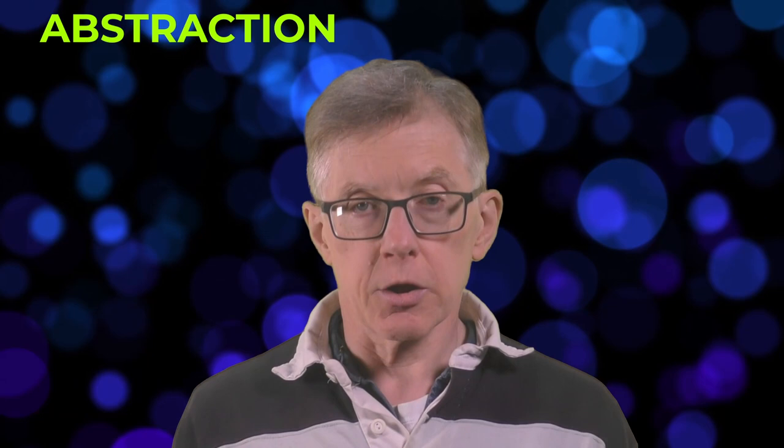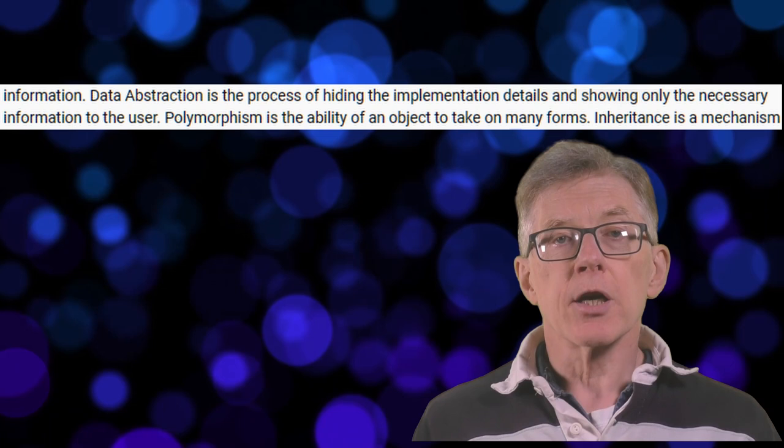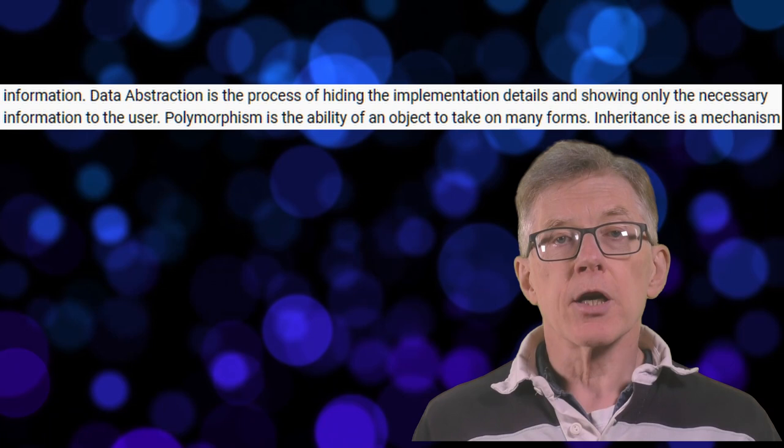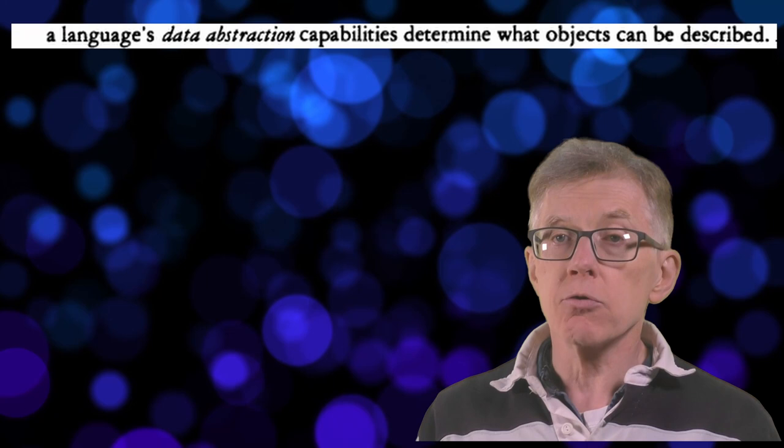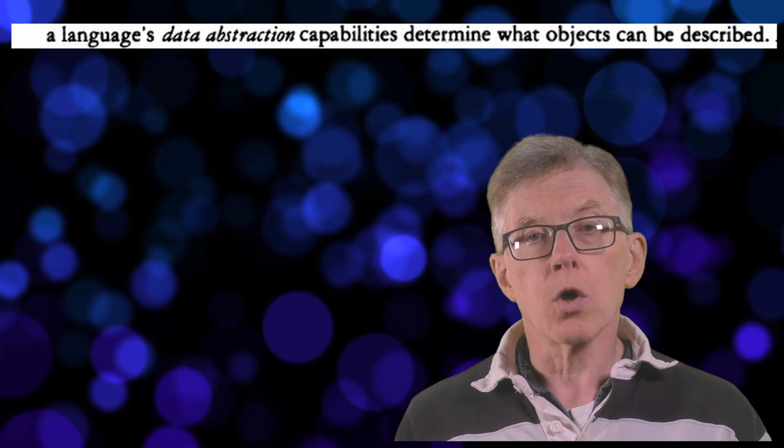Let's start with abstraction. Abstraction is one of those slippery ideas that can mean different things to different people. My friendly chatbot says data abstraction is the process of hiding the implementation details and showing only the necessary information to the user. And this is what the Smalltalk V tutorial says: a language's data abstraction capabilities determine what objects can be described. Both definitions are kind of correct, but what do they really mean?